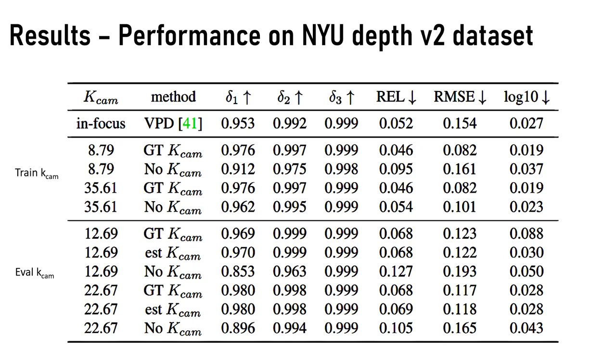This graph shows the depth estimation errors on the NYU Depth version 2 blurred datasets. We have trained our models on datasets with Kcam values 8.79 and 35.61, and we evaluated our models on the datasets created using Kcam values of 12.69 and 22.67.